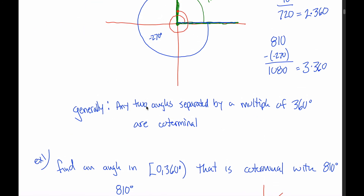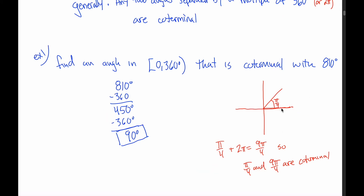Our definition said any two angles separated by a multiple of 360 degrees are coterminal — but I can add: separated by a multiple of 360 degrees or by a multiple of 2 pi, depending on whether the angles are measured in degrees or radians. Just like with degrees, with radians we can also measure in the negative direction. If I measured an angle of negative 7 pi over 4 radians — in the opposite direction — that would leave me at this exact same spot as pi over 4. So pi over 4, 9 pi over 4, and negative 7 pi over 4 are all coterminal.